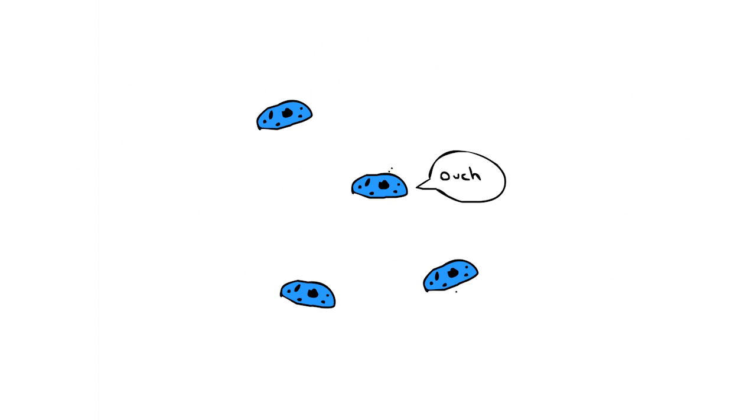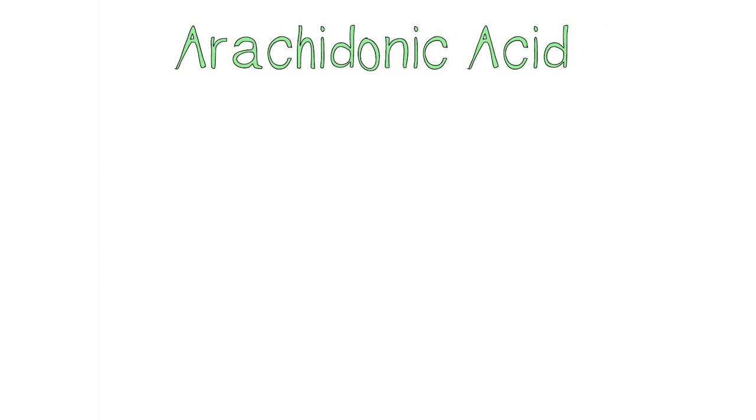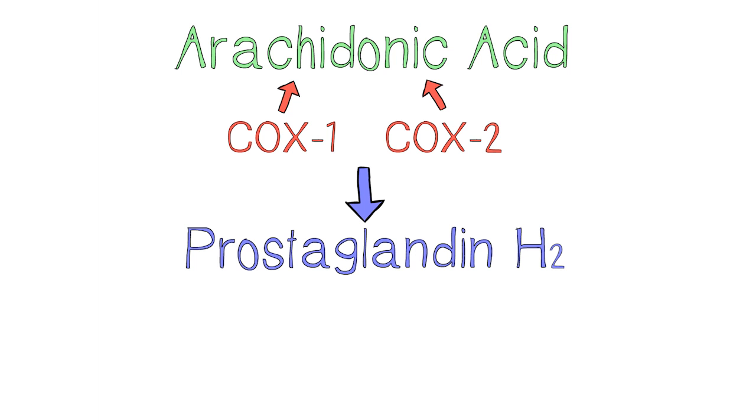When cells are damaged, they release a tuning chemical called arachidonic acid. Two enzymes named COX-1 and COX-2 then break this acid down to form prostaglandin H2.